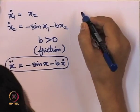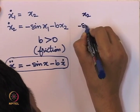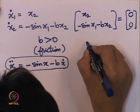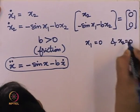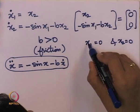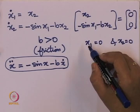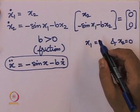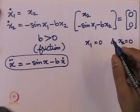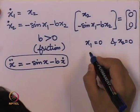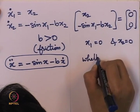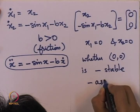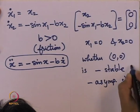For this dynamical system, setting x2 and minus sin(x1) minus b*x2 equal to 0 gives us x1 = 0 and x2 = 0 as one equilibrium point. We could also have x1 = pi, corresponding to the pendulum standing upward, which we know is unstable — that can be confirmed by linearizing and checking eigenvalues are in the open right half plane. We will now check whether the equilibrium point (0,0) is stable or asymptotically stable.